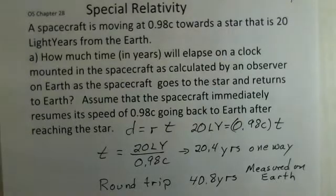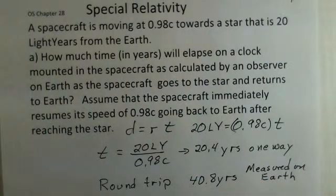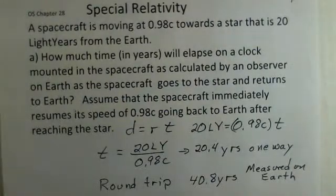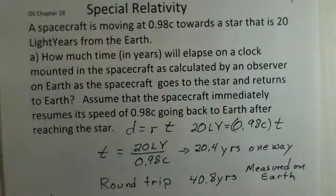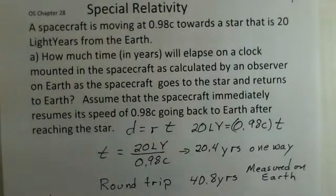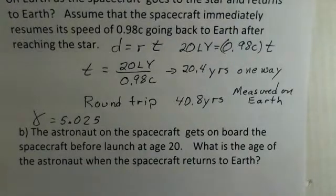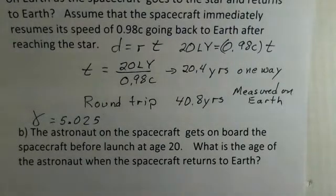So how would we go about calculating the time elapsed on the clock moment in the spacecraft? How would we make that measurement, or that calculation? Well, we need gamma. And the gamma number, you should go ahead and calculate this yourself. This gamma number is 5.025. We again get gamma from 1 divided by the square root of 1 minus v squared over c squared. So you should try this on your own. Ask your instructor if you have a question on this. But the gamma value is 5.025.